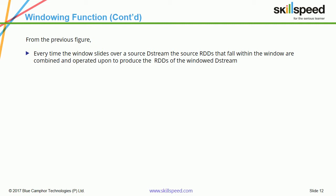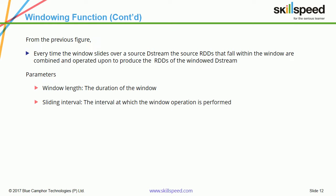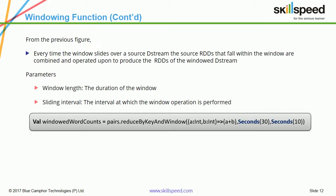Let's take a simple example to understand window length and sliding interval. Here I am typing: val windowedWordCounts = pairs.reduceByKey((a: Int, b: Int) => a + b, Seconds(30), Seconds(10)). For this word count transformation, the first number 30 represents the window length and the second number 10 represents the sliding interval — meaning every 10 seconds I want to process 30 seconds worth of data. These are the terms used in Spark Streaming for windowing.